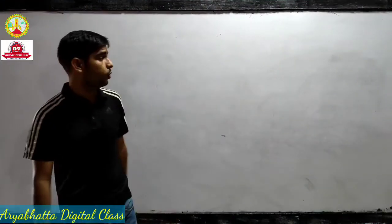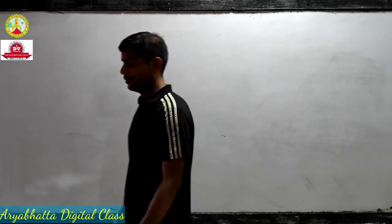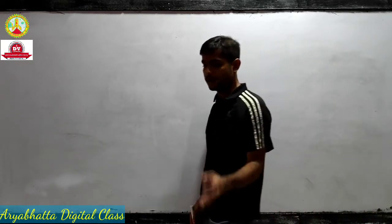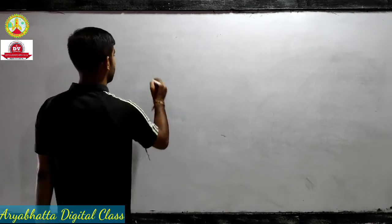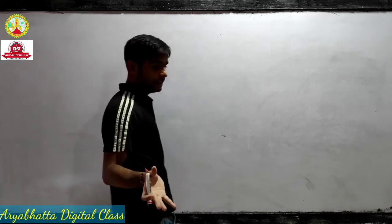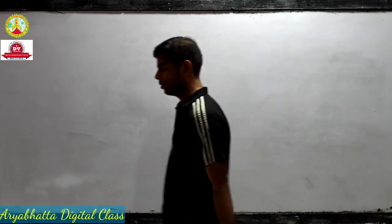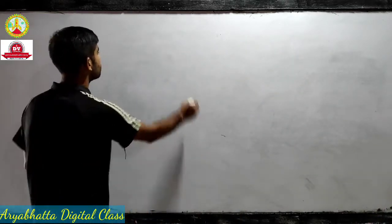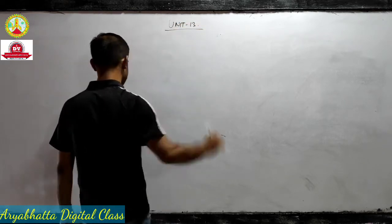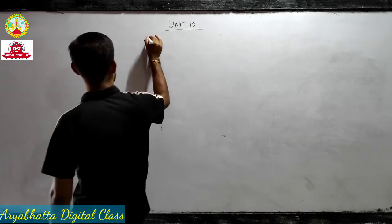Welcome dear students. In this video lecture we are going to start Unit 13. This is actually our last chapter in organic functional groups. In this unit we will learn about organic compounds containing nitrogen — that means amines and the diazonium group. So, Unit 13: nitrogen-containing compounds. First of all we will see about amines.